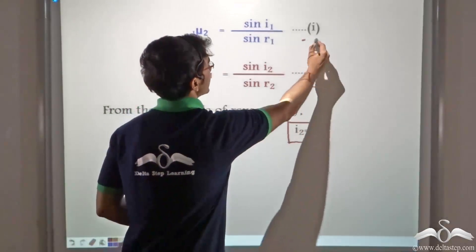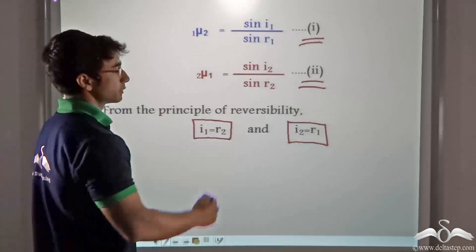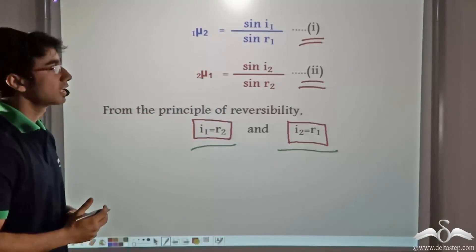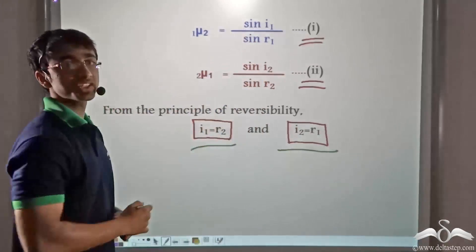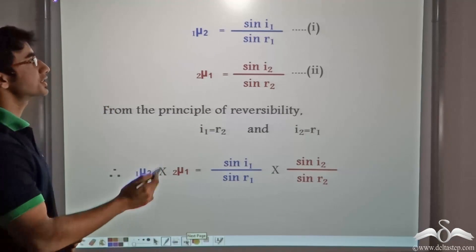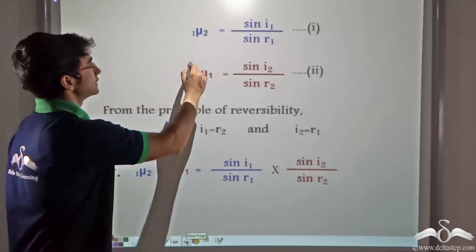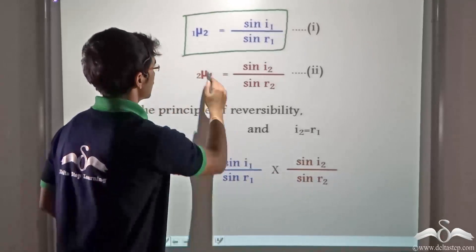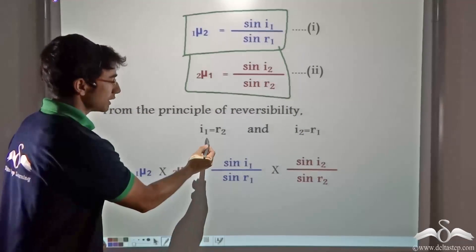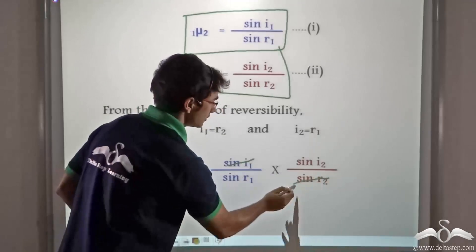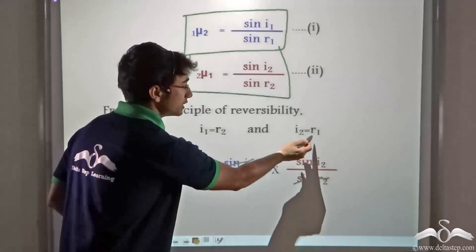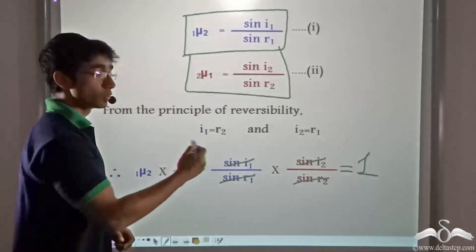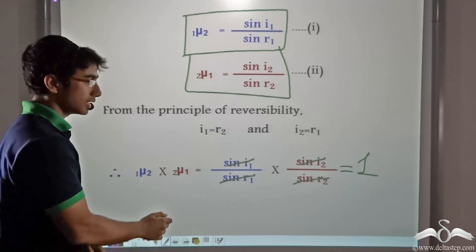There are two equations from the earlier two ray diagrams. Using these two equations and the equalities I1 = R2 and I2 = R1, we multiply equation 2 with equation 1. When we multiply them, we get sin I1 divided by sin R1 multiplied by sin I2 divided by sin R2. Now since I1 equals R2, those terms cancel, and since I2 equals R1, those terms also cancel. This yields the result 1. So we can say that 1mu2 multiplied by 2mu1 equals 1.